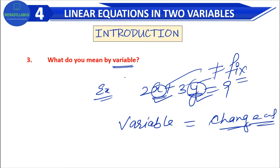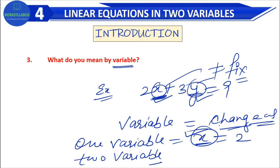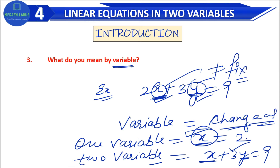Now, equation in one variable versus two variables. This equation has one variable — for example, x is equal to 2, or x plus something — here there is one variable. This is a linear equation in one variable. If I write x plus 3y is equal to 9, here there are two variables x and y — this is a linear equation in two variables. So I have told you three things: degree, equation, and variable.